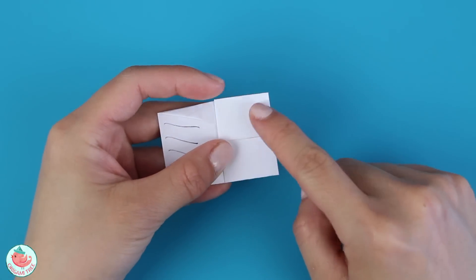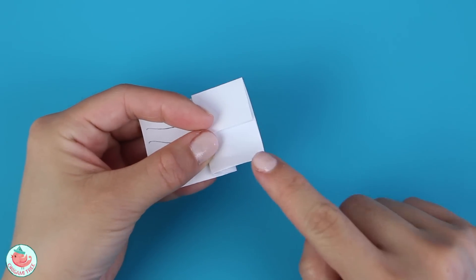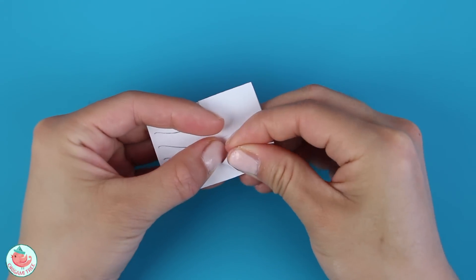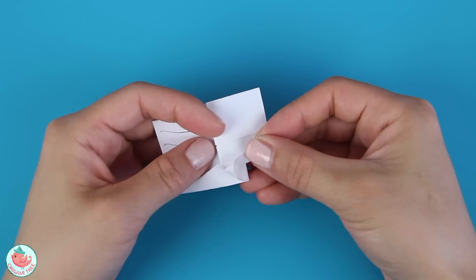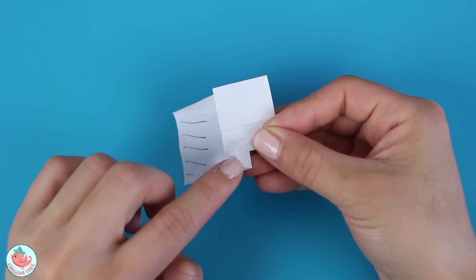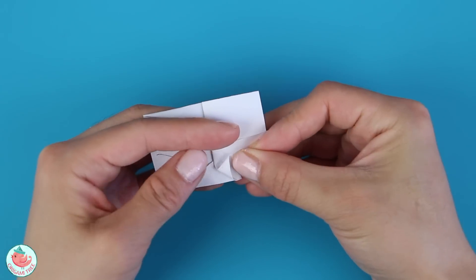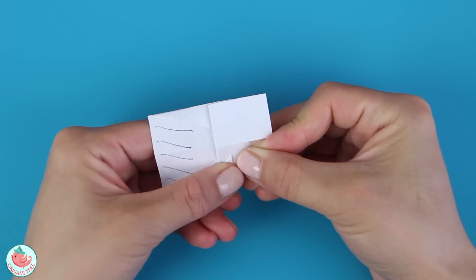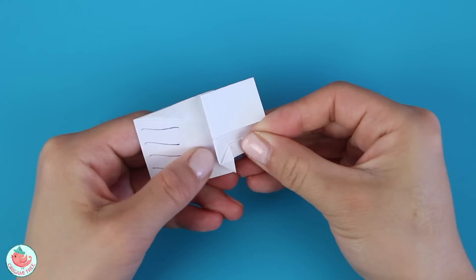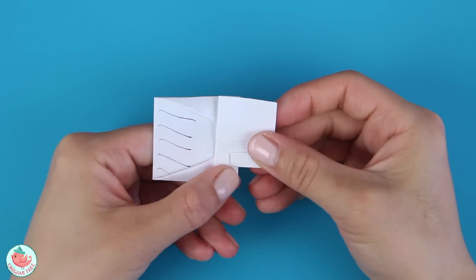And you want to take this part over here and fold it up just the top flap. Fold it upwards and bring it up. And as you're bringing it up, there should be a little triangle shape starting to form over here. So you want to collapse that triangle and squish it.